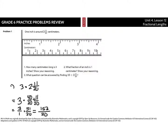Now that's an awkward answer, so if I use my division skills — 153 on the inside, 20 on the outside — 20 goes into 153 about 7 times. 7 times 20 is 140, and you're left with 13 out of 20. So 153/20ths is the same thing as 7 and 13/20ths centimeters.